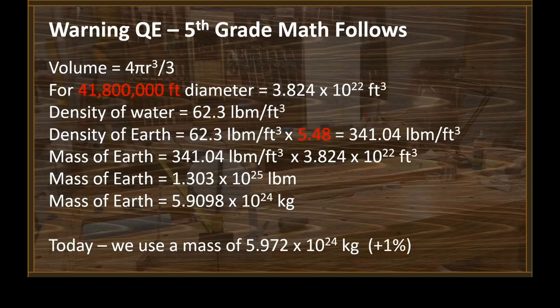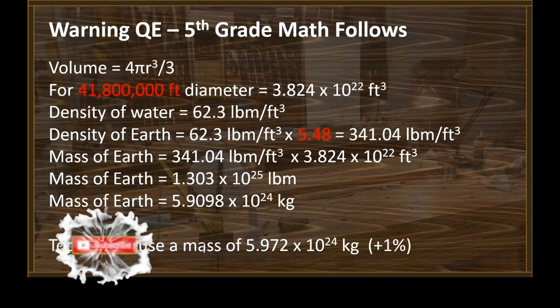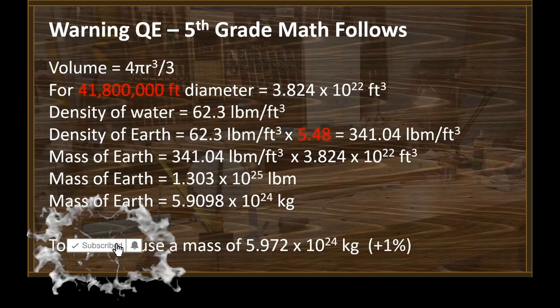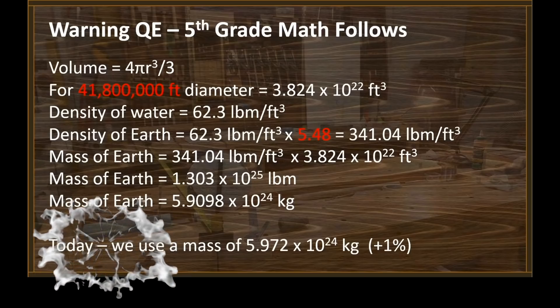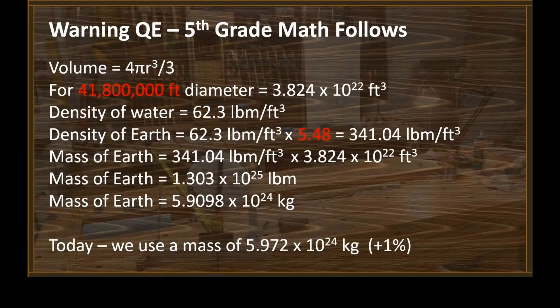The volume of a sphere is four-thirds pi r cubed. For a sphere with a diameter of 41,800,000 feet, the volume is 3.824 times 10 to the 22nd cubic feet. The density of water is 62.3 pounds per cubic foot. The density of the Earth, therefore, is 62.3 pounds per cubic foot times 5.48. And that yields 341.04 pounds per cubic foot.